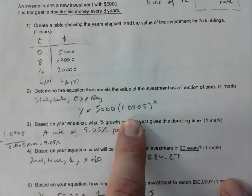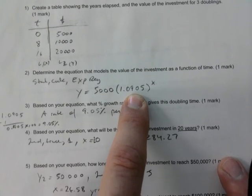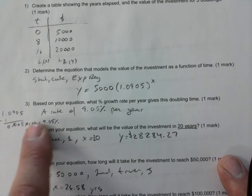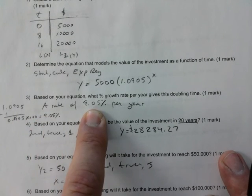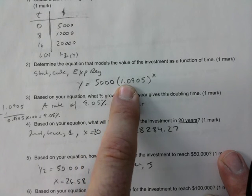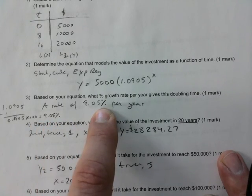So you get your equation. No surprises. We start with 5,000. We get this. So that's a mark, a mark for the table, a mark for this. And then what's the rate of increase? And that's actually 9.05% per year. All you do is you subtract this by one, multiply that by 100, and you get your percentage.